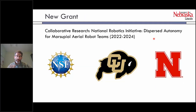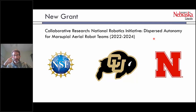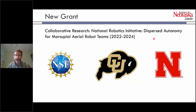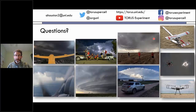A new grant starting January 2022, led by the University of Colorado, is essentially using UAS for targeted surveillance to see if we can improve numerical weather prediction — some of those concepts I've been discussing, where we now have National Science Foundation funding to continue that effort. And with that, I'll stop and take any questions.